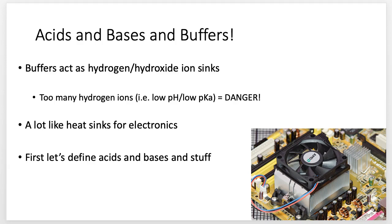If you have too many hydrogen ions, that can be dangerous. If you're in a super acidic environment, that could be really bad. Or if you're in a super basic environment, that could be really bad too. Just like a computer has heat sinks — this metal here collects heat and sends it out — that's what we're doing with a buffer system. We use a different molecule to absorb those hydrogen or hydroxide ions to prevent them from damaging things.